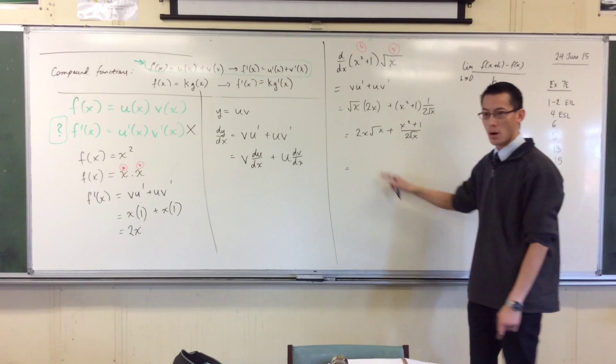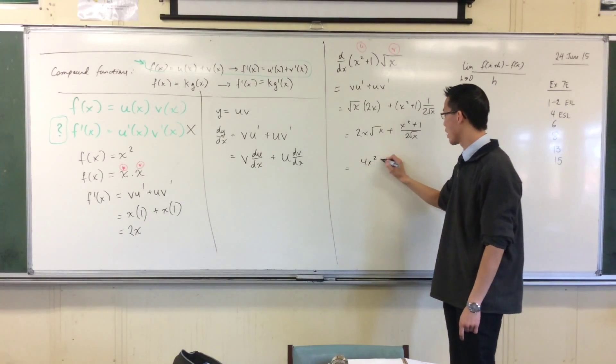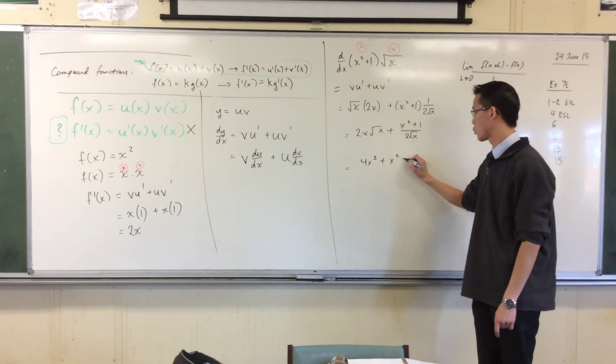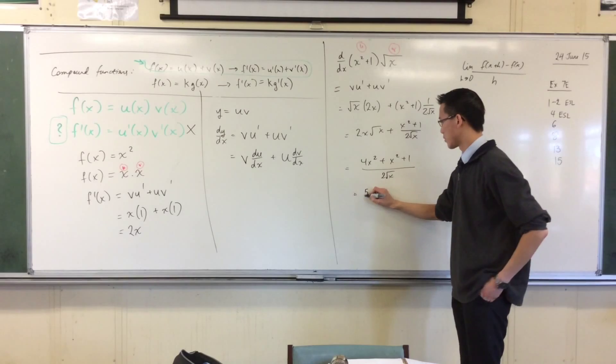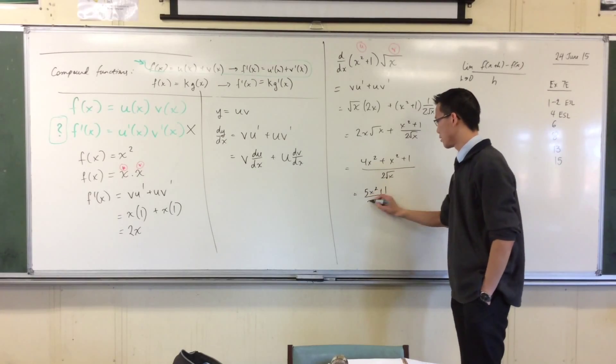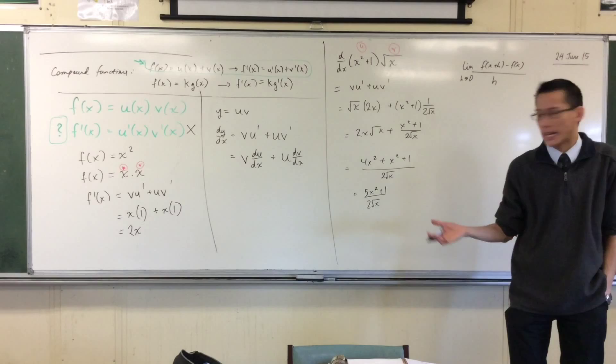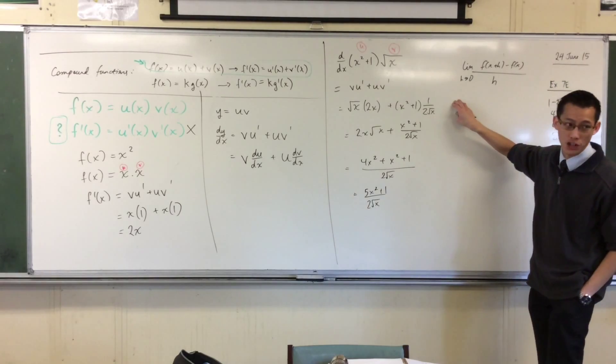What would this become? This would be 4x squared plus x squared plus 1 on 2 root x, right? And so I guess that's 5x squared plus 1, and I suppose you can rationalize if you want, but it's done. Like, I've done the critical thing. I've actually differentiated it.